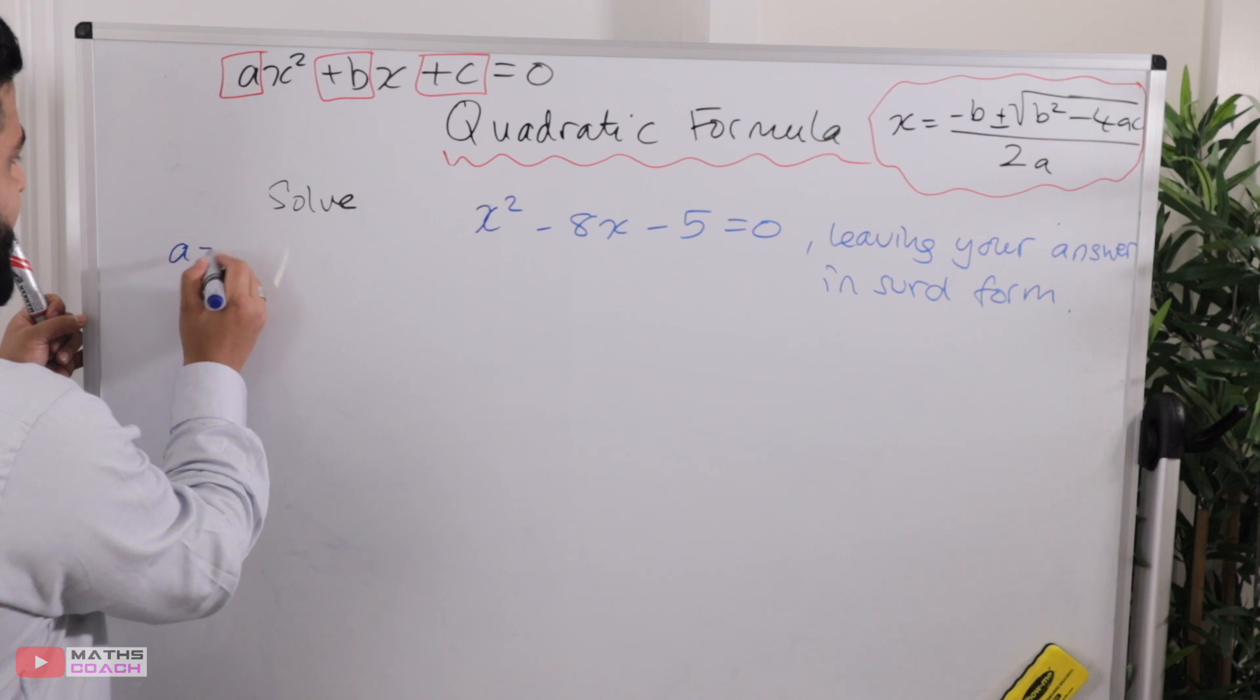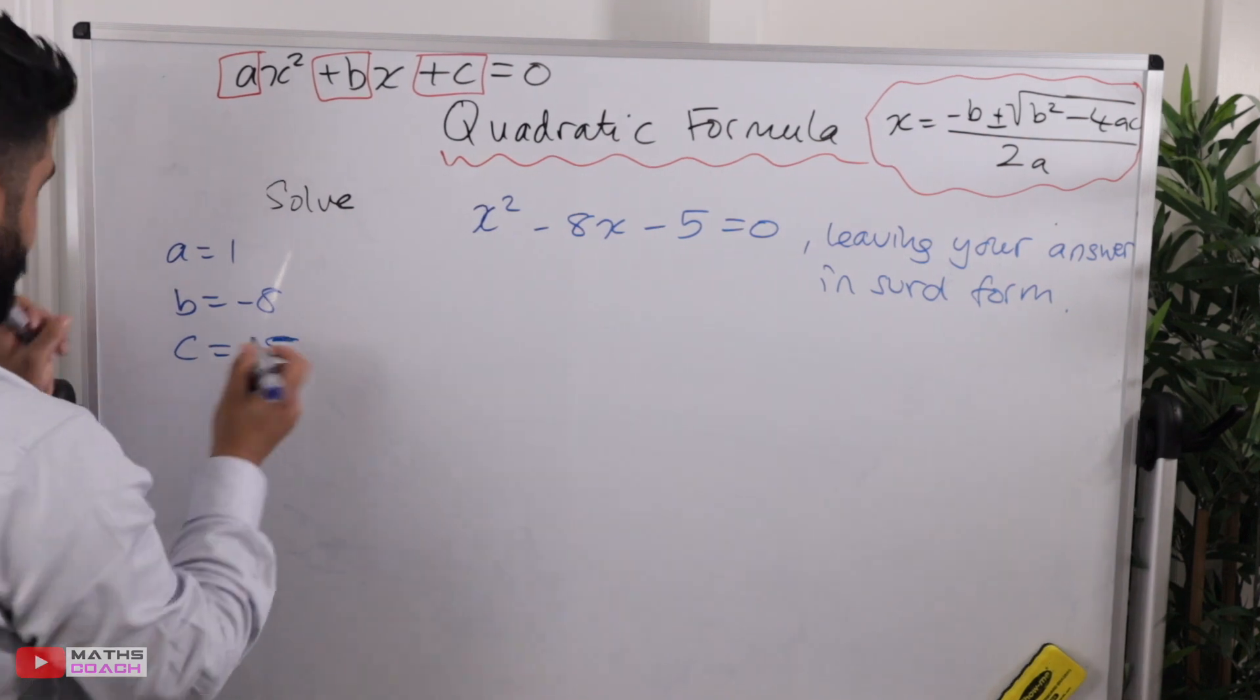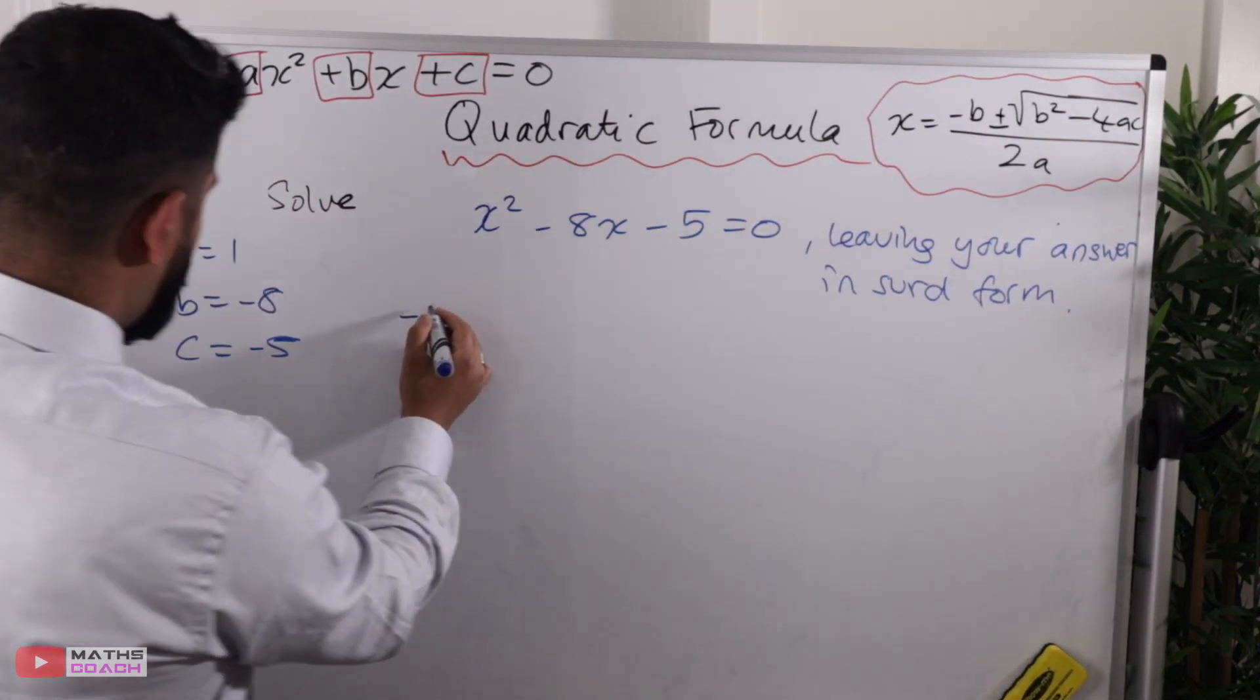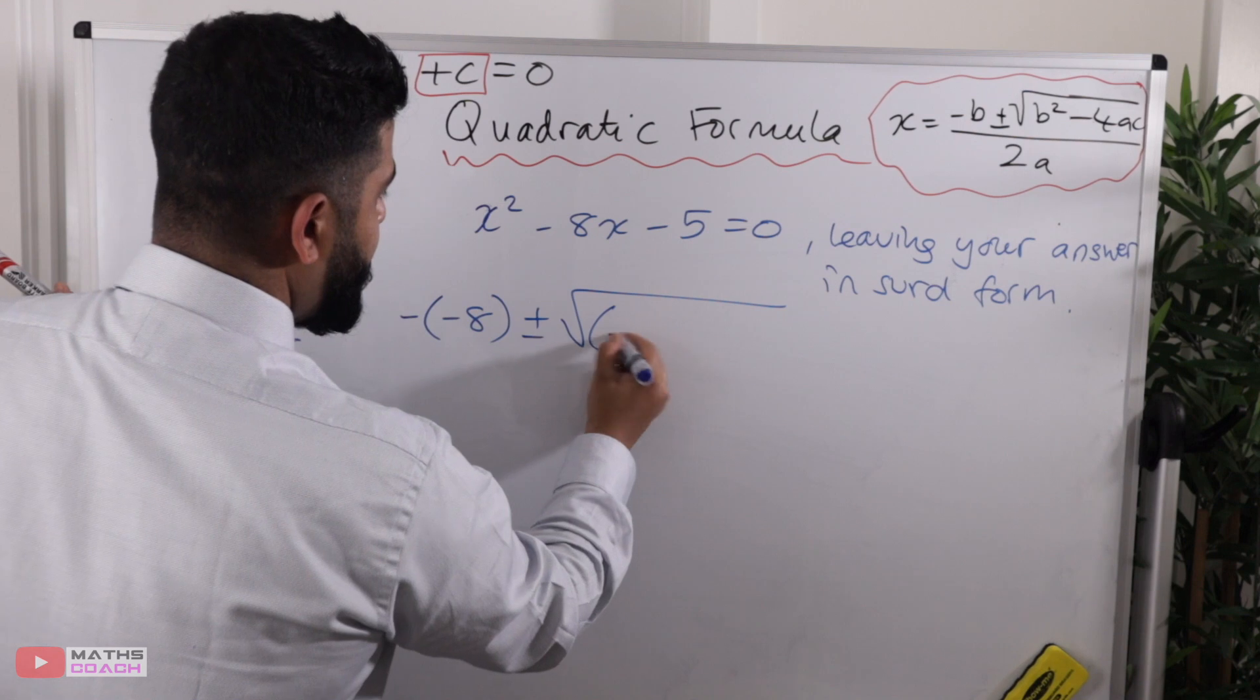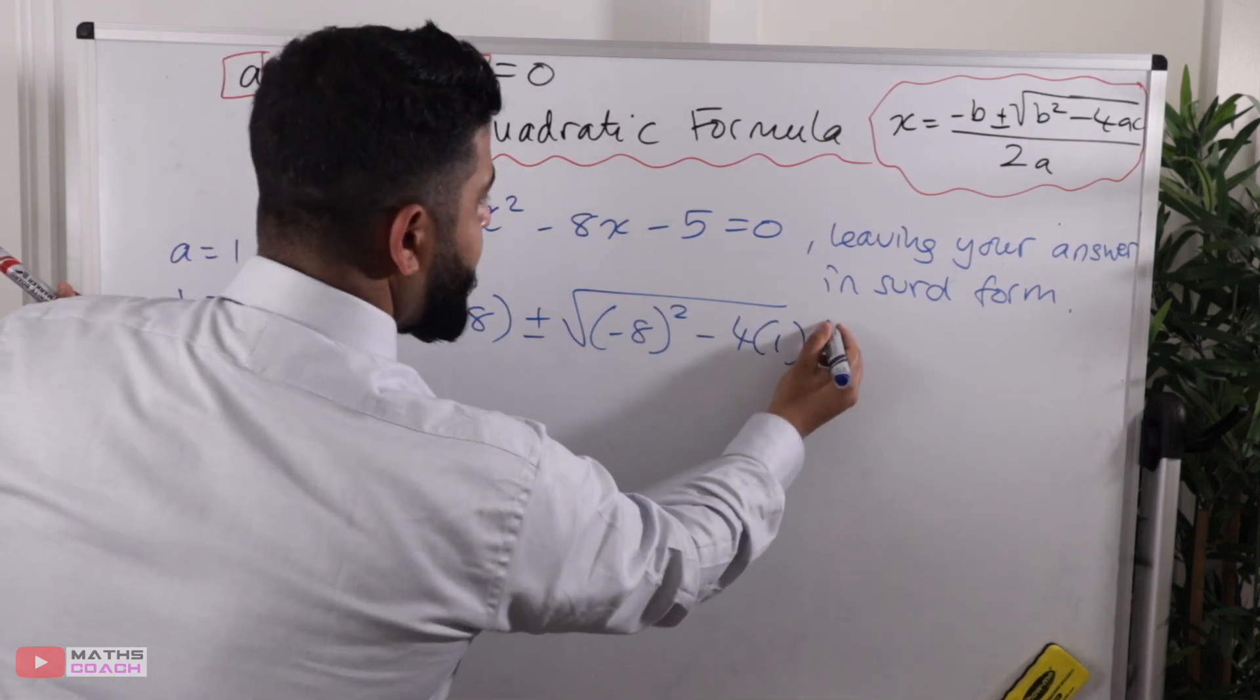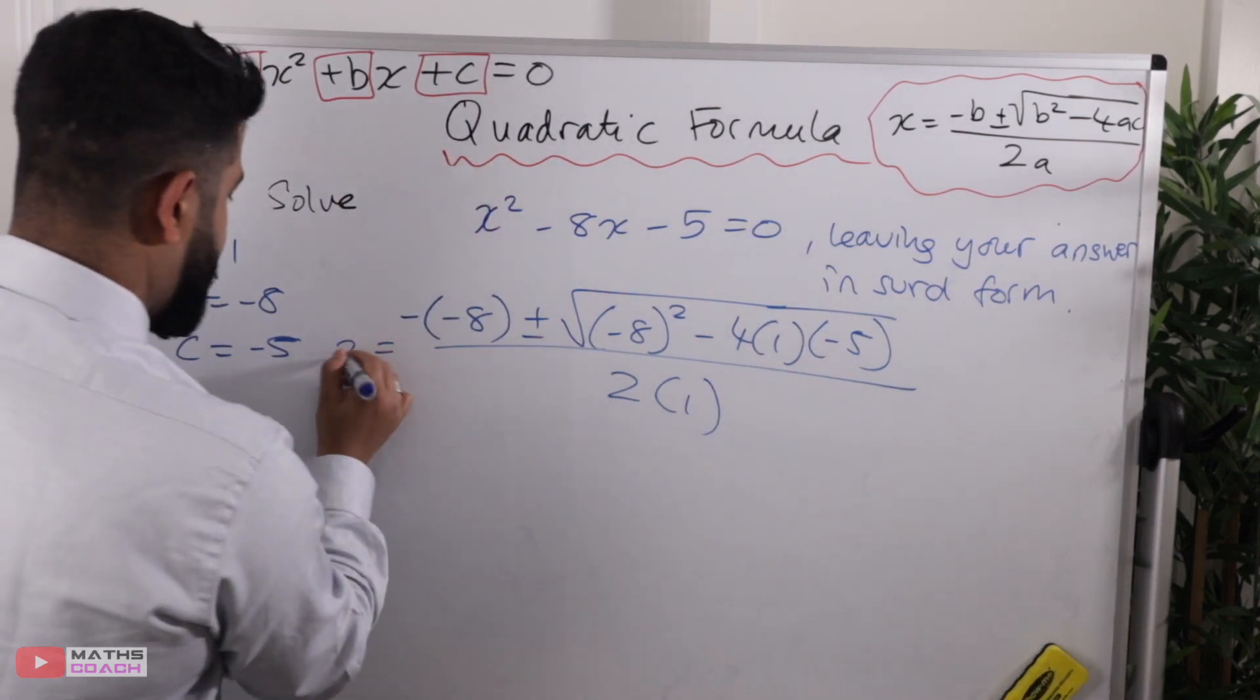So A is 1, B is minus 8, and C is minus 5. Let's put that into our formula, so we've got minus B, B is minus 8, so that's going to go inside a bracket here, plus or minus, square root, minus 8 squared, minus 4 times 1, times minus 5, all over 2 times 1.